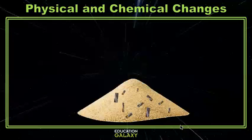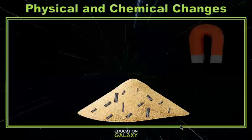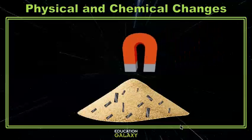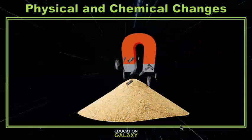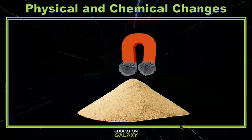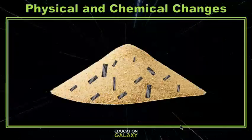Other physical changes include both mixtures and solutions. Let's make a mixture of iron filings and sand. Can I undo this? Yes, really easily in fact. All I have to do is pass a magnet over my mixture and it pulls out all of the iron filings for me. So this is a physical change.